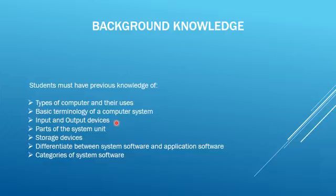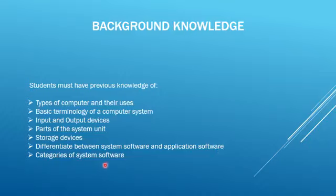Input devices like keyboard, mouse, scanner, and output devices like monitor, printers, plotters. Parts of system units like processor, power supply, USB ports, RAM and ROM, cache memory, and storage devices. Primary storage — RAM and ROM — and secondary storage like DVDs, CDs, Blu-ray discs, USBs, and even online storage.